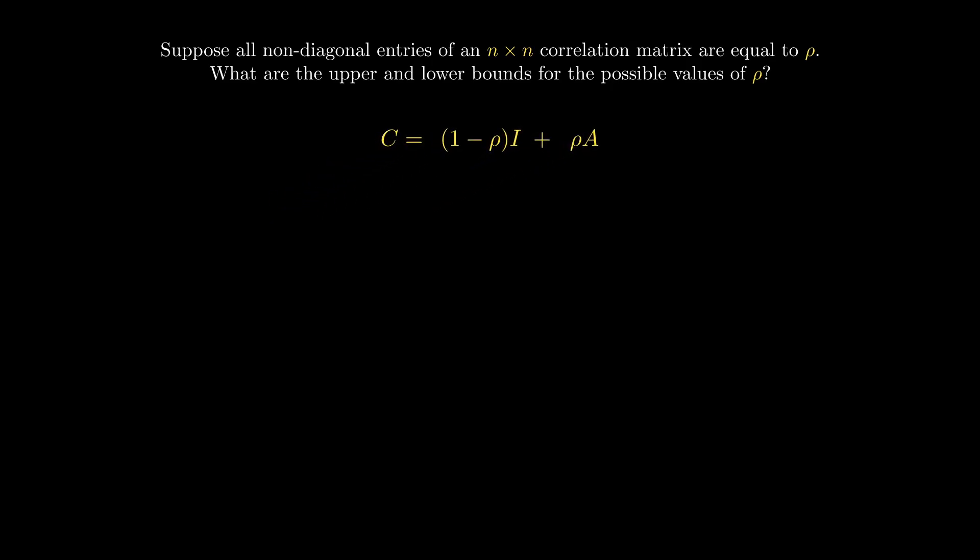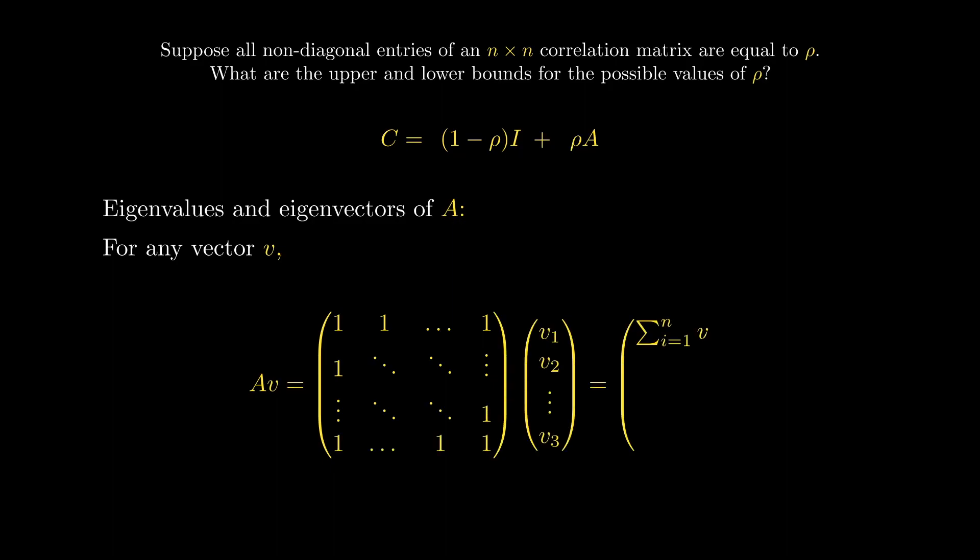To find the eigenvalues of C, we'll first find the eigenvalues of this A matrix. For any vector V, multiplying on the left by A will yield a vector whose entries are just the sum of all the entries in V.